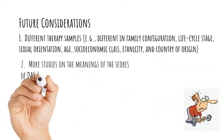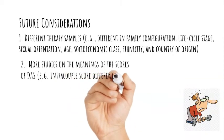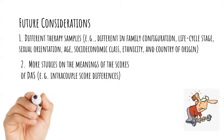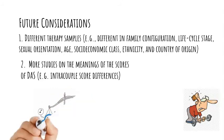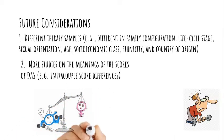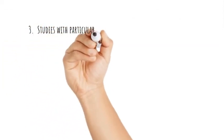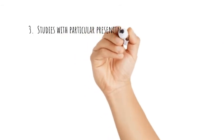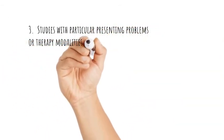Along this line would be studies that focus on intercouple scale score differences. For example, are there differences in the divorce potential between couples? Were the wife's score significantly higher than the husband's when compared with couples? Were the husband's score significantly higher? Future studies of the clinical usefulness of the scale with particular presenting problems or therapy modalities are also encouraged.